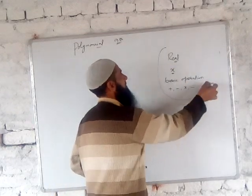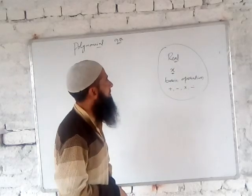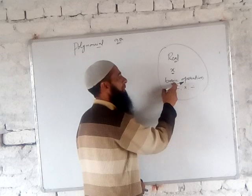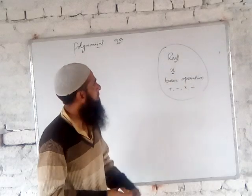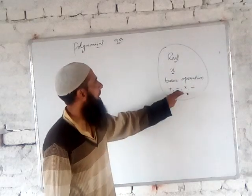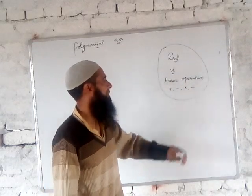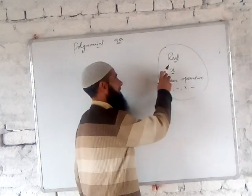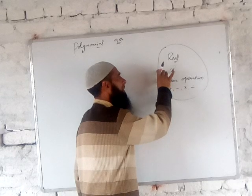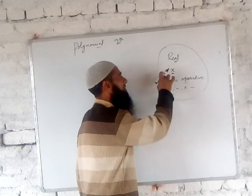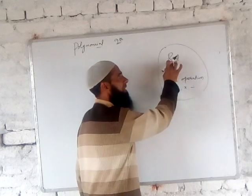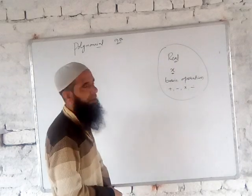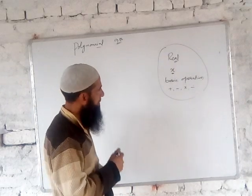This forms a system. This system has real numbers, variables, and basic operations: plus, minus, multiplication, and division. Any expression that comes out from the combination of these things — real numbers, variables, along with these basic operations — is an algebraic expression. For example, we take an expression: